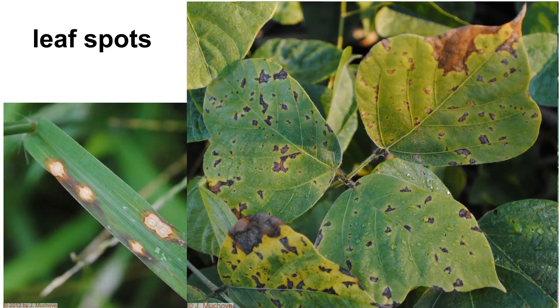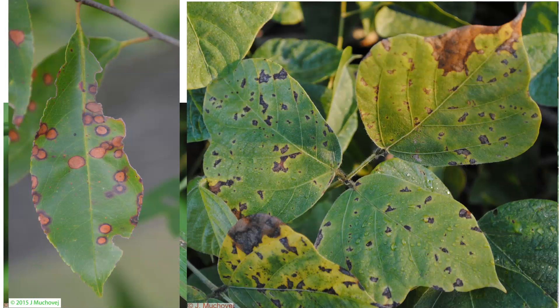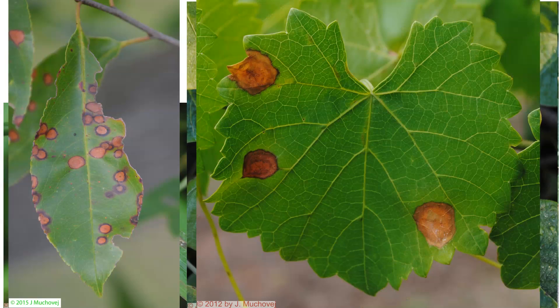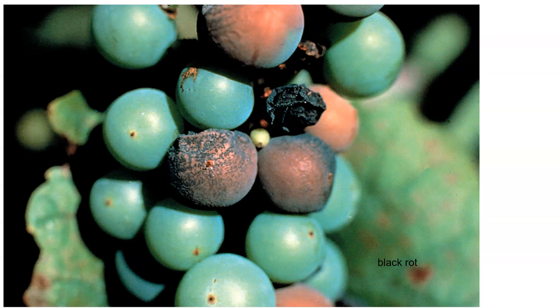Over here we have another leaf spot bounded by the veins, making it more of an angular type. This is a very interesting leaf spot — it appears to be on cherry, and you can see concentric rings in it. It's necrotic: death of the tissue through which the symptomology appears. Another leaf spot is much larger and round. We can also have necrosis of fruits — this shows black rot, caused by a fungus causing withering of the grape and breakdown of the tissue.